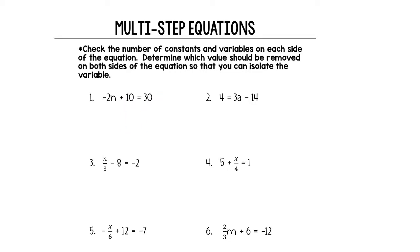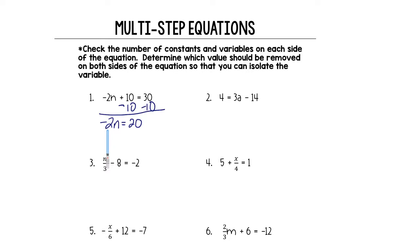So let's do just that. We want to move positive 10 to the other side to get negative 2n alone. So the opposite of plus 10 is going to be minus 10. We subtract 10 from each side. That gives us negative 2n equals 20. Now we want to work on getting n alone. The only thing keeping n from being alone is this negative 2. What is negative 2 doing to n?